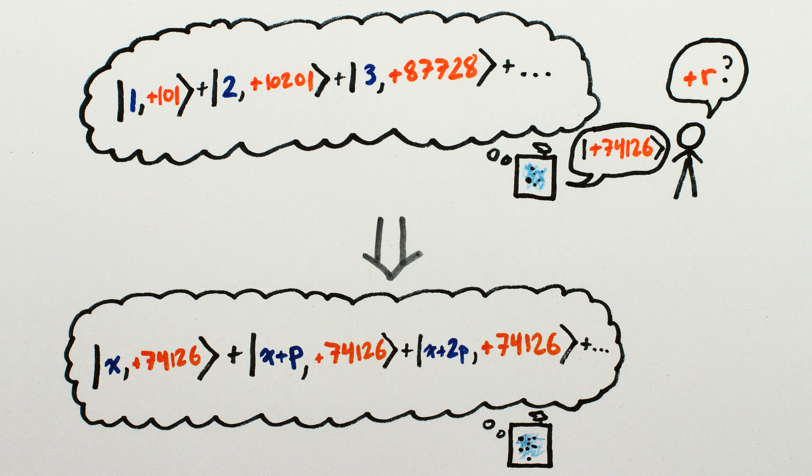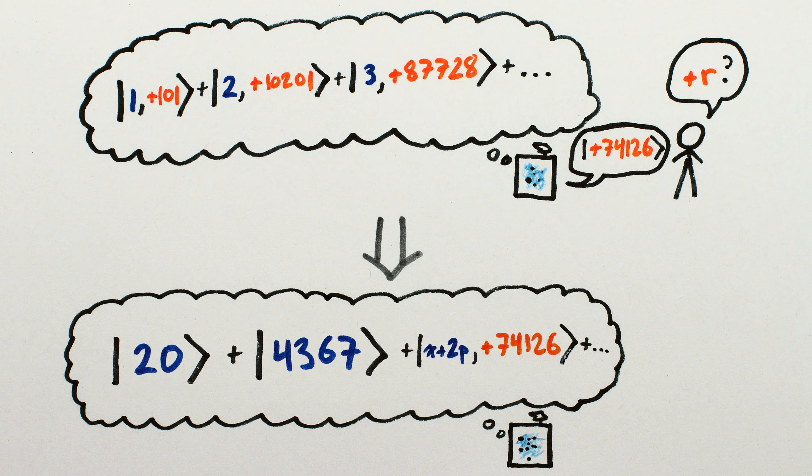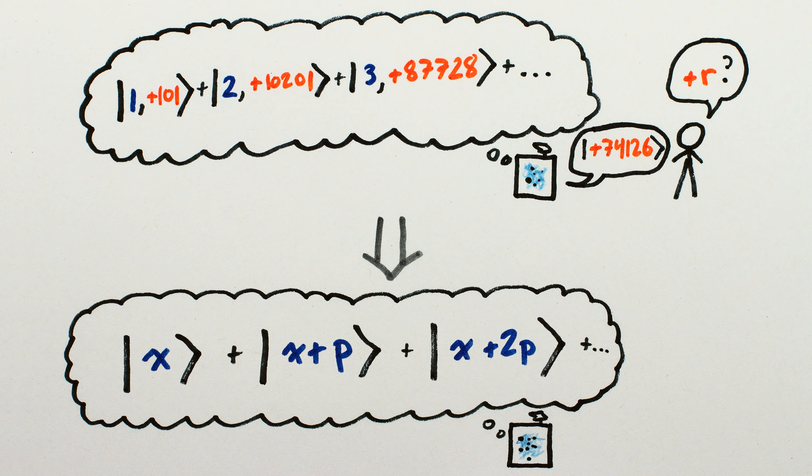Because we're not actually dealing with particularly big numbers, I've done the calculation and can tell you that this would mean we had a superposition of 20 and 4367 and 8714 and so on, and the difference between them is p. But in a real situation, we of course wouldn't know what the numbers in the superposition are. We just know that they're separated with a period of p, or a frequency of 1 over p, though we still don't know what p is.